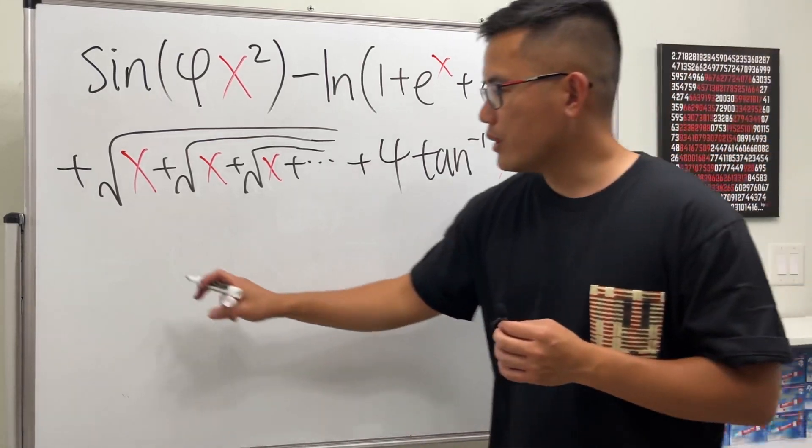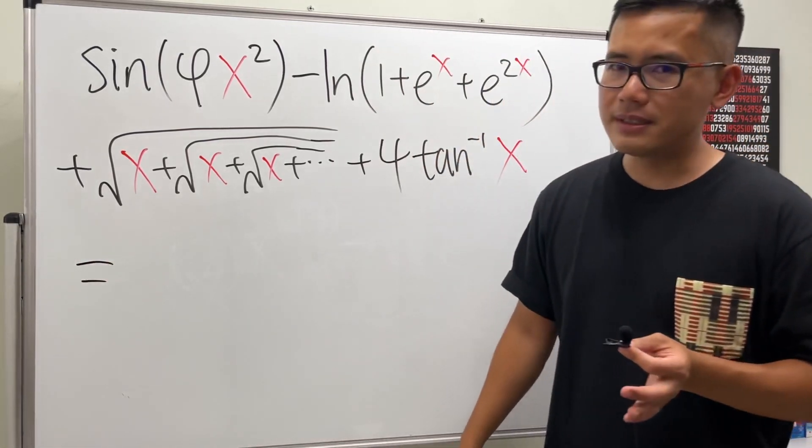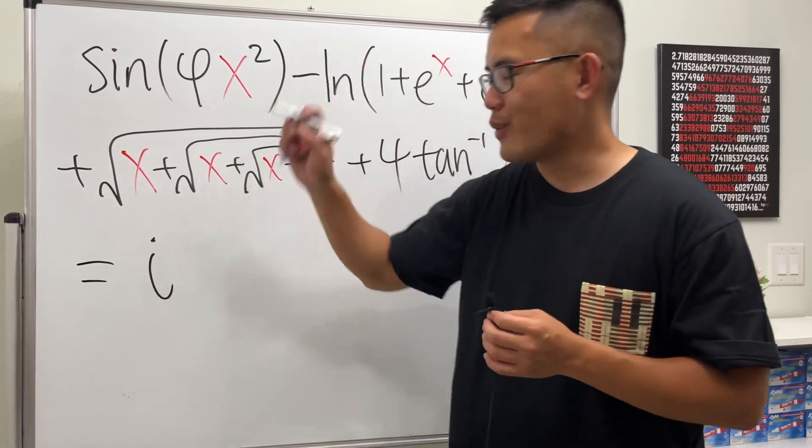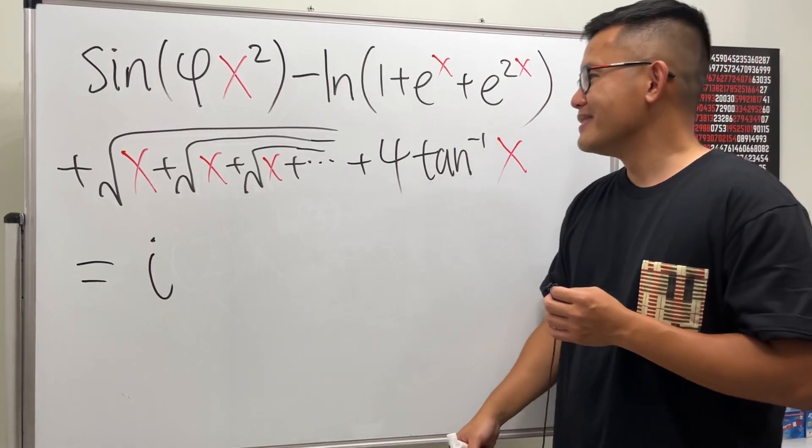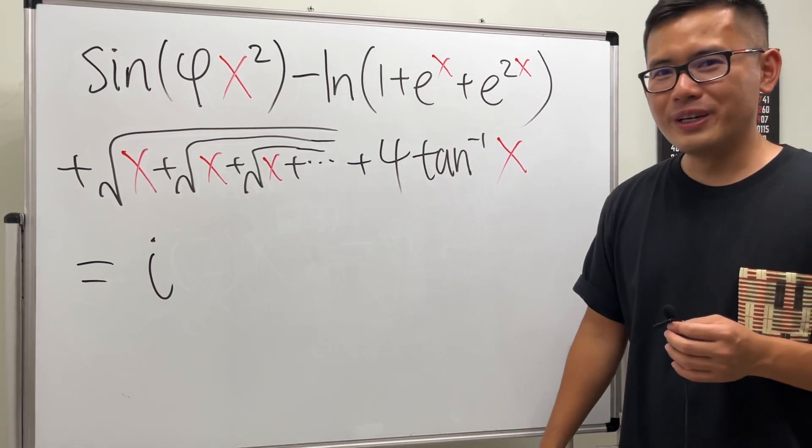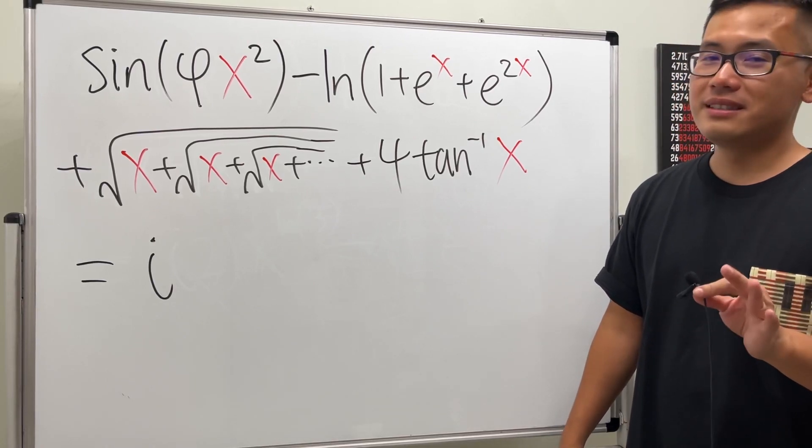Alright, so I think that's pretty good. And of course this is equal to a famous number, let's put down i right here. Yep, looks really really cool, huh? And most likely this is not solvable.